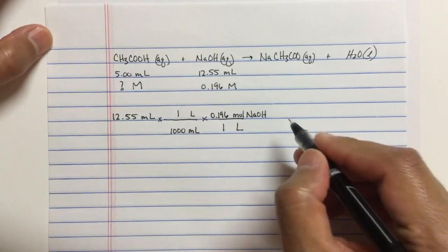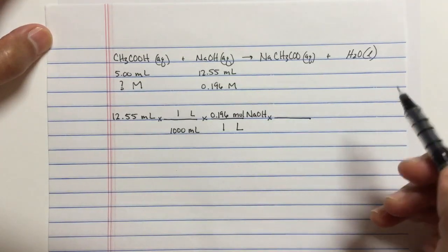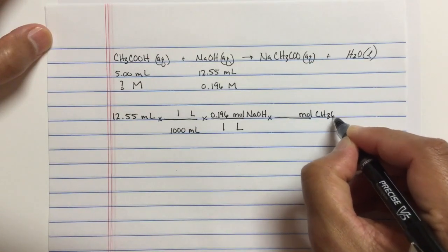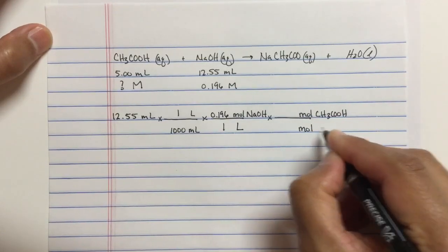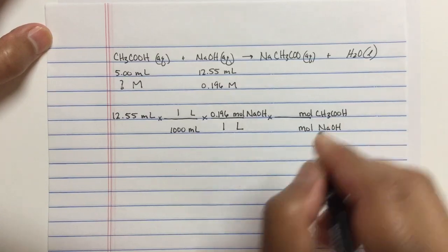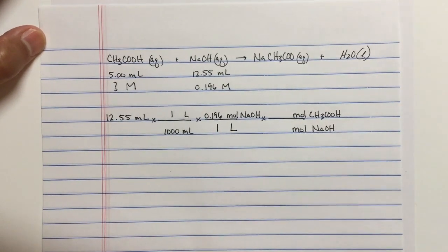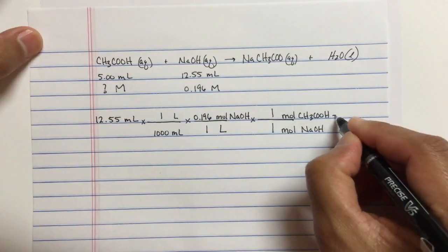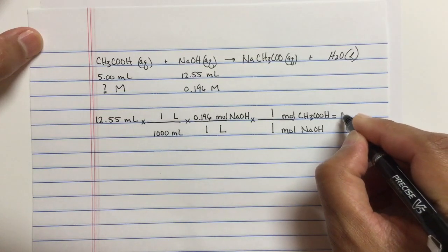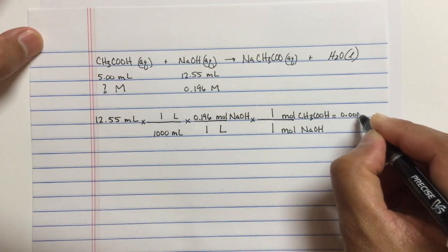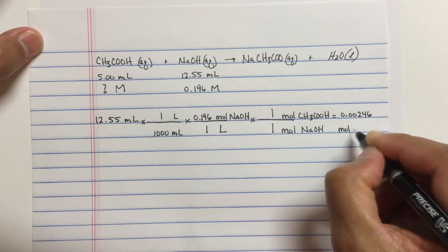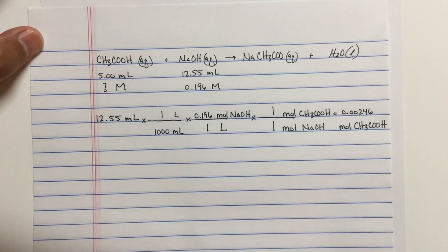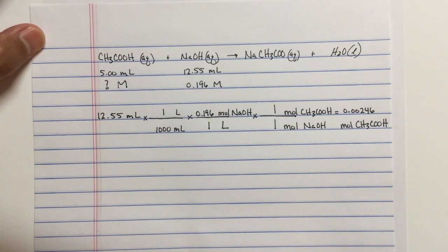Once we have the moles of NaOH, we can convert to whatever we're looking for. In this case, the mole of acetic acid. Cancel mole of NaOH. And so the mole ratio is one-to-one. And so the moles of acetic acid that react with the NaOH is 0.00246.